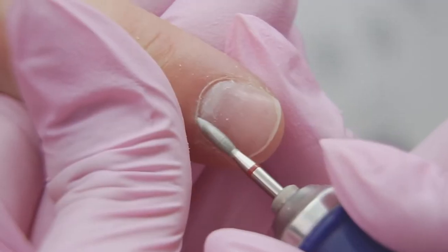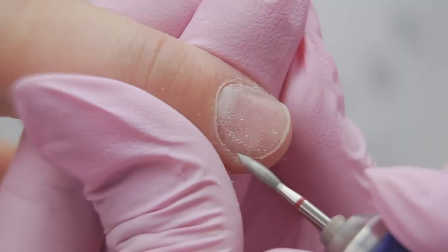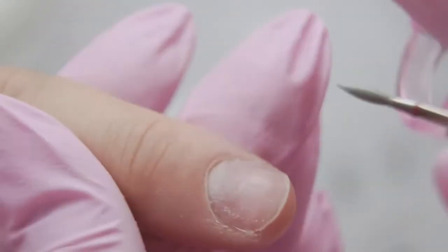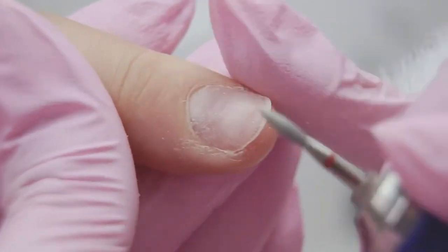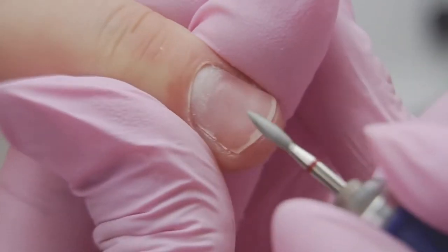I'm using a flame diamond drill bit to lift up the cuticle and clean out the pterygium. My model's nails aren't very arched, so I took a 0.23 drill bit. If the nails were more arched, I would take a 0.21 one.